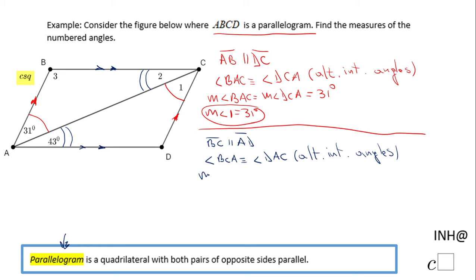And obviously, then if the angles are congruent, they have the same measure. The measure of angle BCA equals the measure of angle DAC.